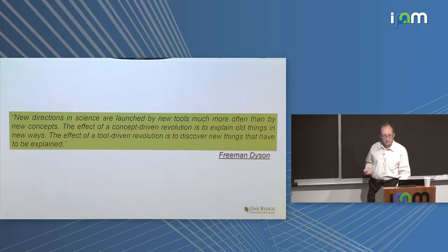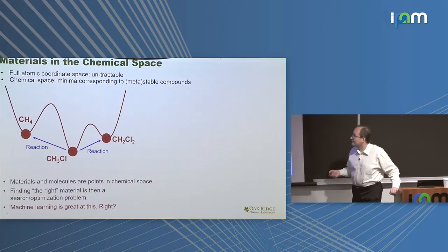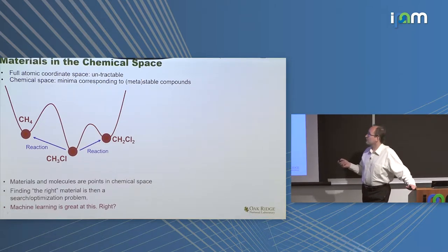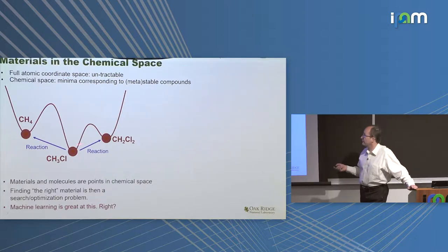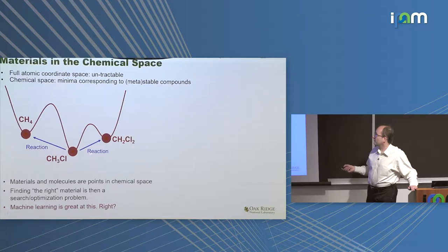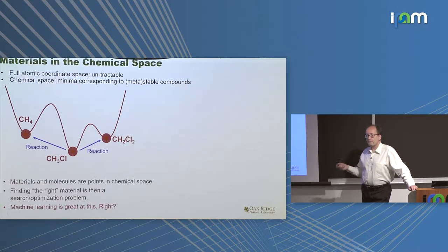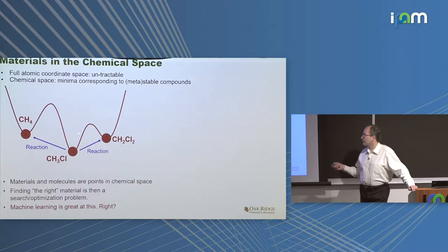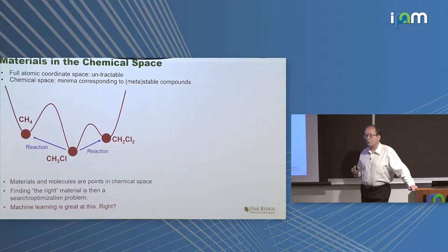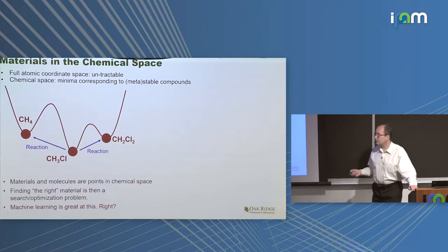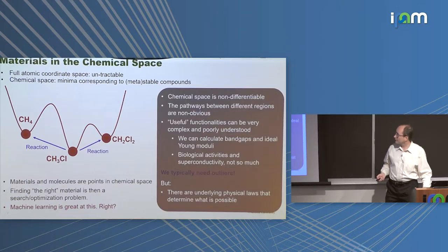So how can microscopy help us discover materials? If we want to talk about materials, we need to look at them in chemical space. Materials are ultimately a collection of atoms. We can calculate the energy as a function of their coordinates. The problem is this space is too large to even think about. The issue of finding the right material becomes the issue of search in this chemical space.